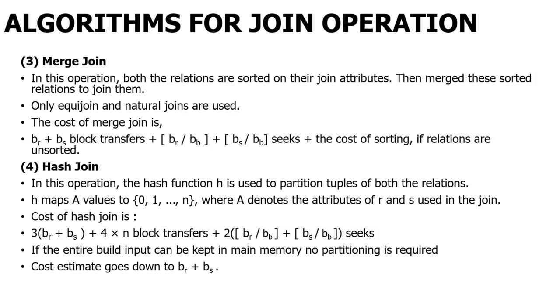Similarly, for the hash join, you perform the cost calculation with the formula: 3 × (BR + BS) + 4 × n_h block transfers, and 2 × (BR/BB + BS/BB) seeks for the seek calculation. If you have enough space and want to calculate directly, you can go for BR + BS. Thank you.